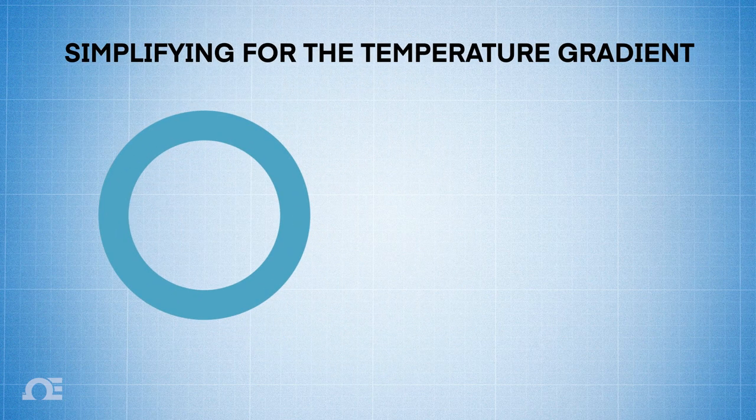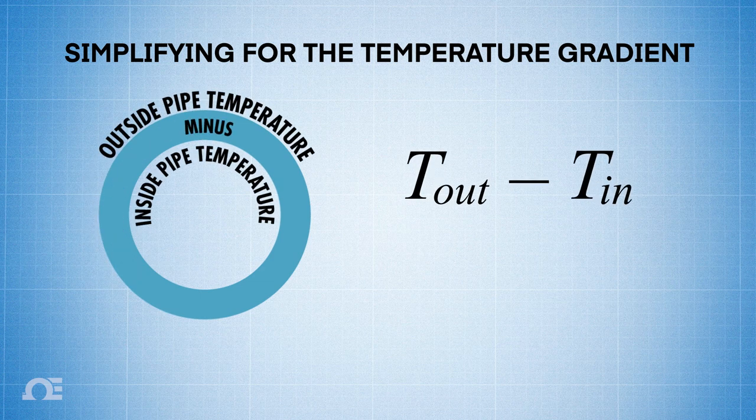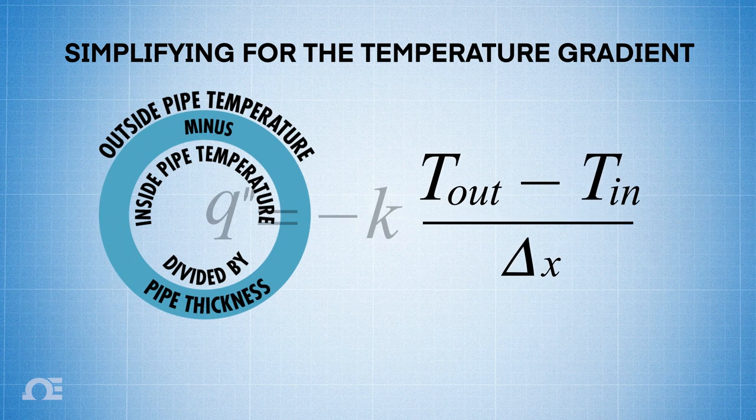If we have a pipe with a known wall thickness, the temperature gradient can be simplified to the temperature on the outside of the pipe minus the temperature on the inside of the pipe, divided by the thickness of that pipe.